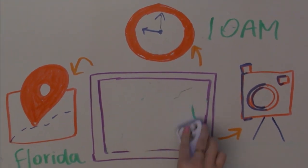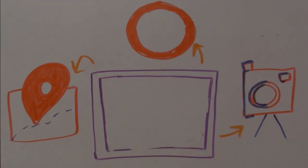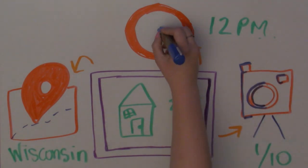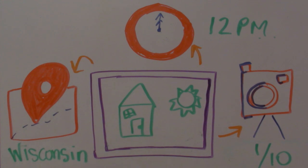The descriptive metadata is changing because the picture has changed. Let's have a look at one last photo. This one was taken in Wisconsin at my house. It was taken at 12 p.m. and the exposure of the camera was set at 1 tenth of a second.